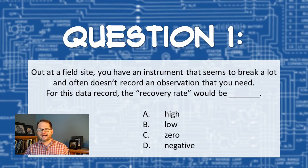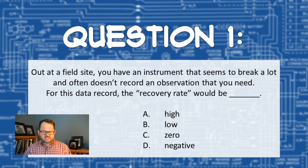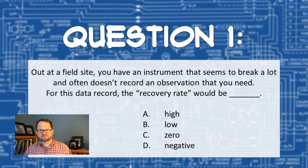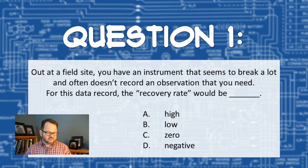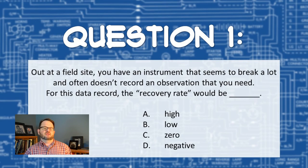Before we move on to part two, let's ask five quick questions. Question one: out at some field site, you have an instrument that seems to break a lot and often doesn't record an observation — like your anemometer keeps transmitting missing values rather than good observations. For this data record, would the recovery rate be high, low, zero, or negative? Make a choice from those four options and get a little feedback before you move on to question two.